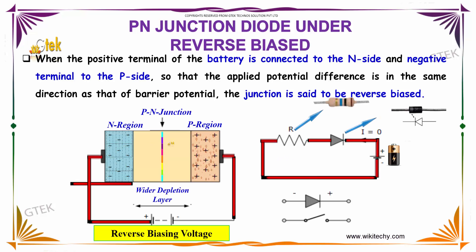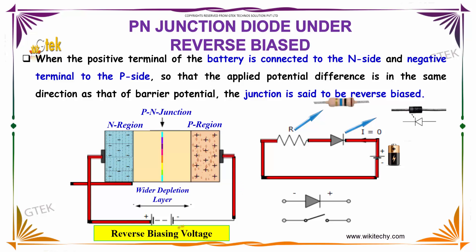Here is the p-n junction which is under reverse bias. What is reverse bias? The n side is connected to positive and the p side is connected to negative — that's reverse bias.